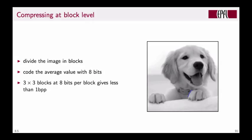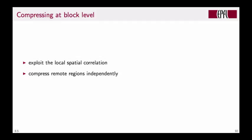The power of block level compression comes from exploiting local correlation between neighboring pixels in each block. Since blocks are independent, we separate the coding for different parts of the image.